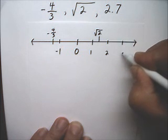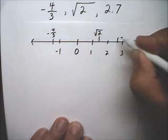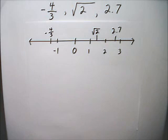And if this is 3, then 2.7 is right there.